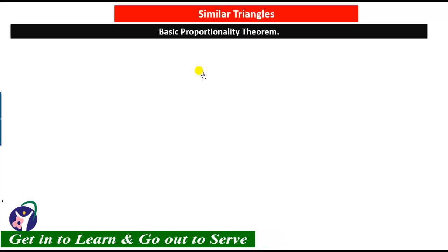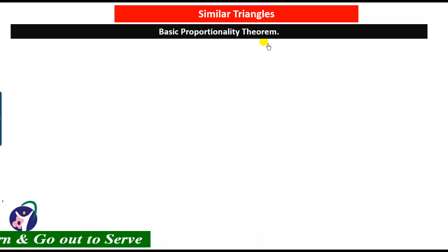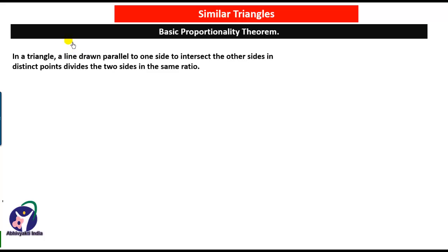Students, let us see the Basic Proportionality Theorem. It states that in a triangle, a line drawn parallel to one side to intersect the other two sides in two distinct points divides those two sides in the same ratio.